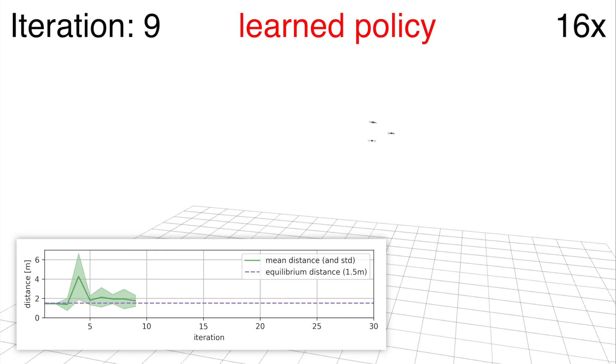Initially, the learned policy is not yet able to imitate the expert since the distance between agents deviates from the equilibrium distance the expert would provide. However, by following initially suboptimal policies, the neural network learns to correct its own mistakes.